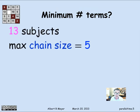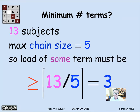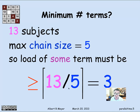Can you do better than three subjects? A trivial argument says no, because in the previous example we had 13 subjects to schedule. The maximum chain size was five, so it was going to take at least five terms. That means you have to distribute 13 subjects among five terms, and there has to be some term with at least the average number of subjects — namely 13 divided by 5 — rounded up to an integer. So the minimum term load is 3, because 13 divided by 5 rounded up is 3.